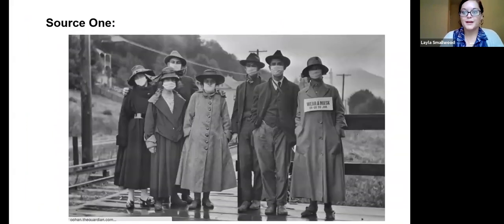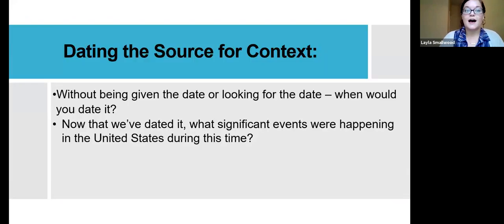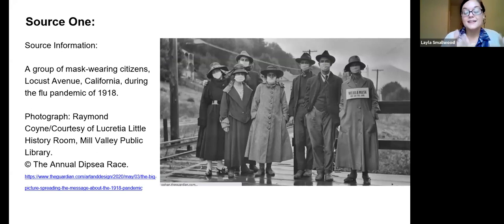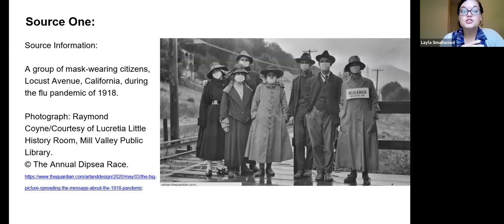Now the source information — this might answer a few questions. This is a group of mask-wearing citizens, Locust Avenue, California during the flu pandemic of 1918. It's a photograph taken by Raymond Coyne, courtesy of the Lucretia Little History Room, Mill Valley Public Library. It's from the annual Dipsea race. Nobody guessed California — I wouldn't have either. The Dipsea race is actually the oldest cross-country trail running event, one of the oldest foot races of any kind in the United States — a seven and a half mile event held annually since November 19th, 1905.